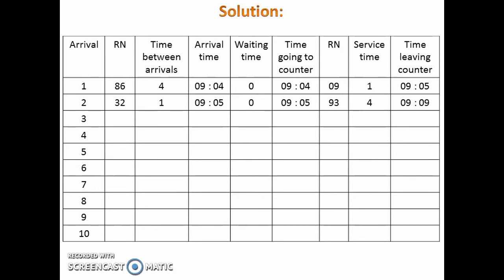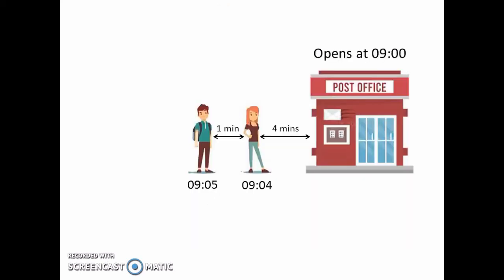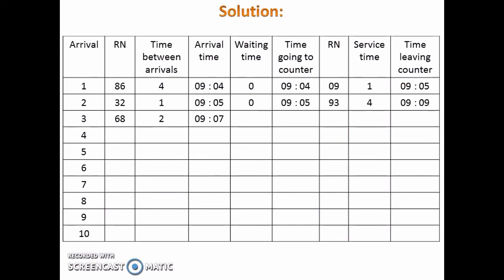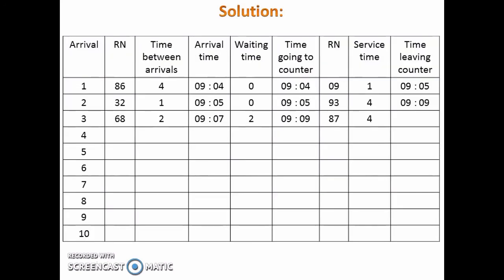For the third person, random number for time between arrivals is 68. 68 lies in this interval, thus time between arrivals for the third person is 2 minutes. This means that the third person arrived 2 minutes after the second person arrived, that is, he arrived at 9:07. Since the second person finishes getting his service at 9:09, the third person has to wait for 2 minutes, so the waiting time is 2 minutes. He will go to the counter at 9:09. Random number for service time is 87. 87 lies in this interval, thus service time for the third person is 4 minutes. This means that the third person leaves the counter at 9:13.